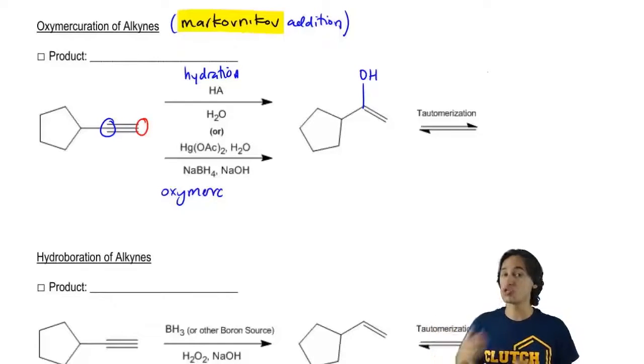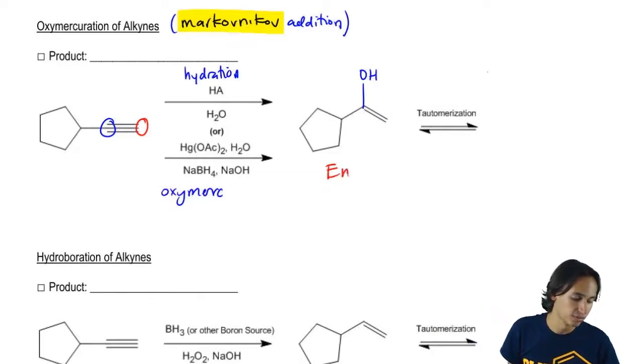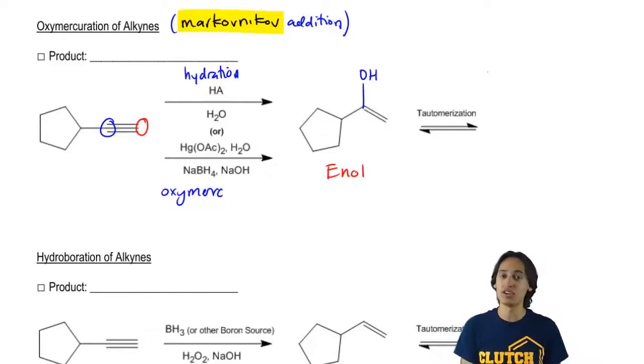So both of these reagents really lead to the same intermediate structure which is going to be this enol. Are you getting that so far? The reason I'm calling it an enol is because now I have a Markovnikov alcohol on a double bond. But we know that it's not going to stay like that because enols are not stable.